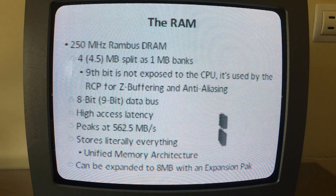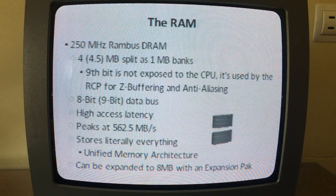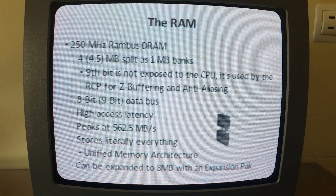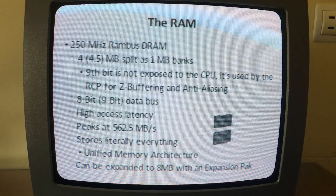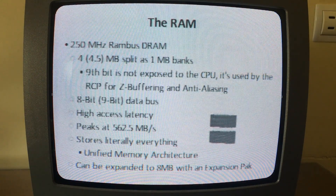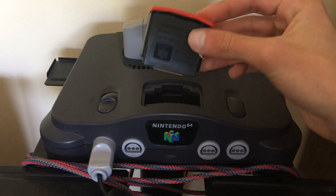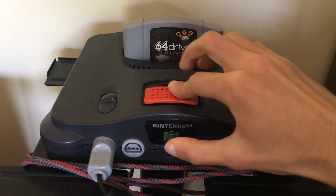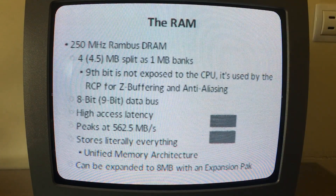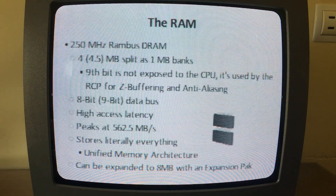Finally, the Random Access Memory, or RAM for short. This is the N64's long-term memory, and it stores everything — that can be code, images, sound, etc. Essentially, anytime the CPU or RCP needs something, it has to be in RAM first. The N64 has 4MB of RAM, but it can be expanded to 8MB if you have the Expansion Pack, which is this red cart that you shove here in the front of the console. 4MB of memory is tiny, especially considering that you're probably watching this video on a device with a hundred times that.